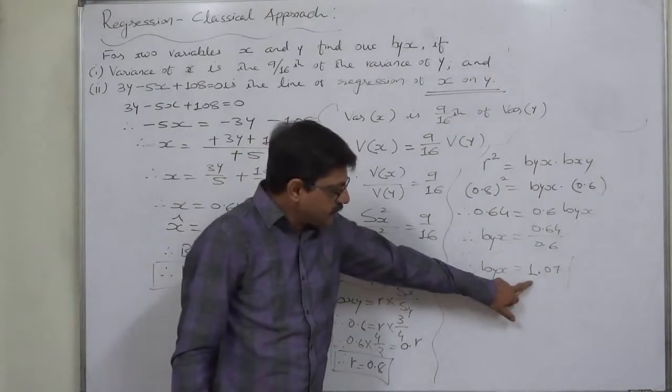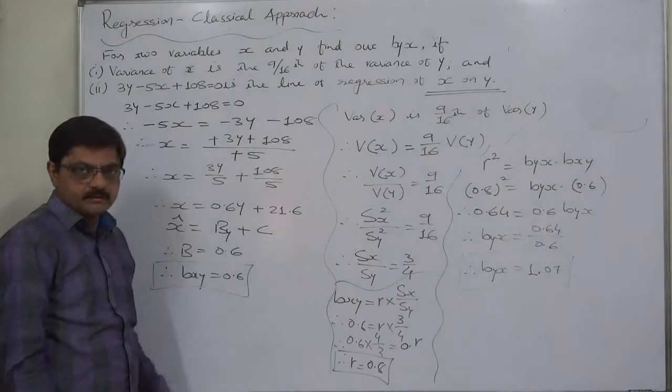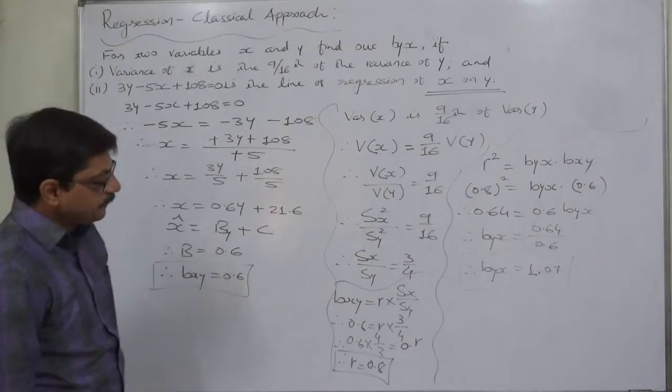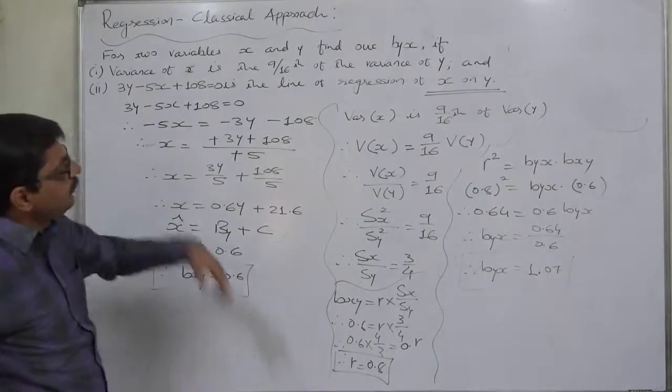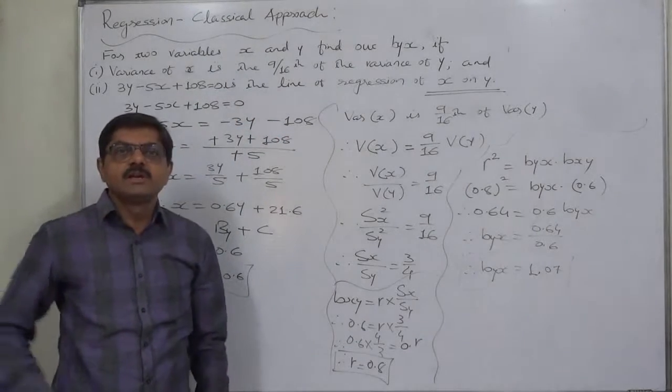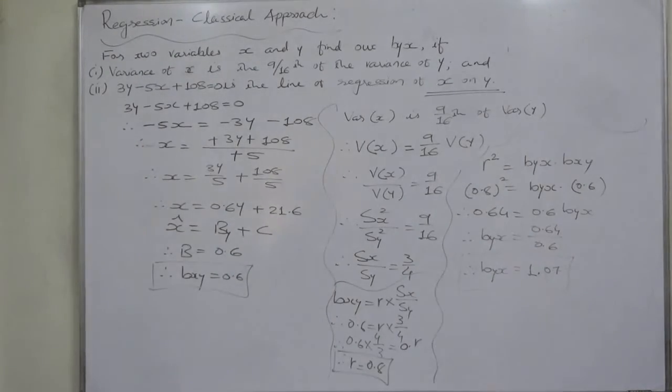One coefficient of regression is greater than 1 but another is less than 1, and all three are positive - these are the checkpoints. So in this way we found b_yx on the basis of the line of regression of x on y and some information about the ratio of two variances. That's it. Thank you very much.